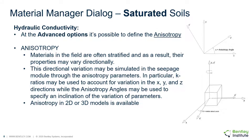It is also possible for the software to consider the effects of anisotropic flow along different coordinate axes. This feature is useful for materials that may have been deposited or compacted such that one direction has a higher hydraulic conductivity than the other. A typical use case would be a layer of clay that has been compacted, where lateral flow is easier than vertical flow. Anisotropy can also be applied in 3D with the specification of two anisotropic axes.